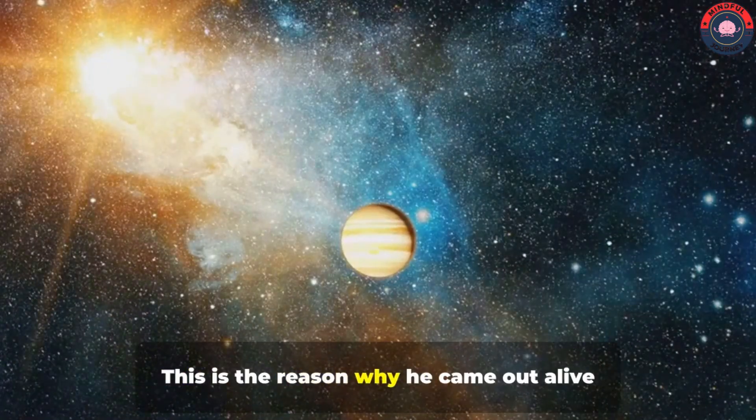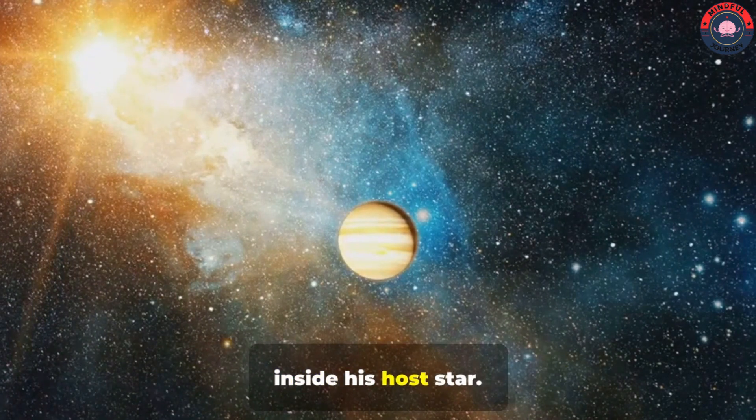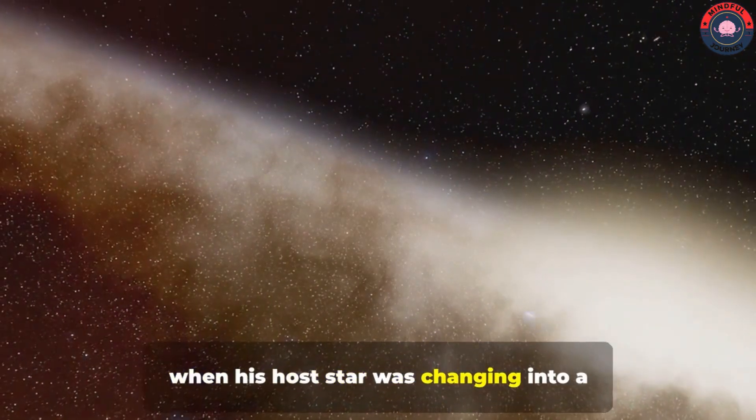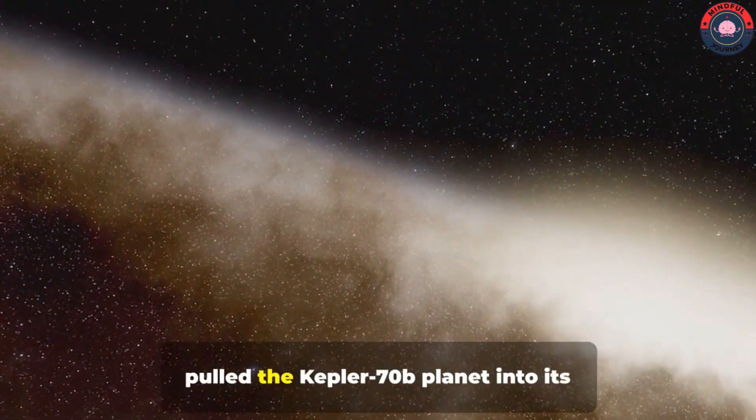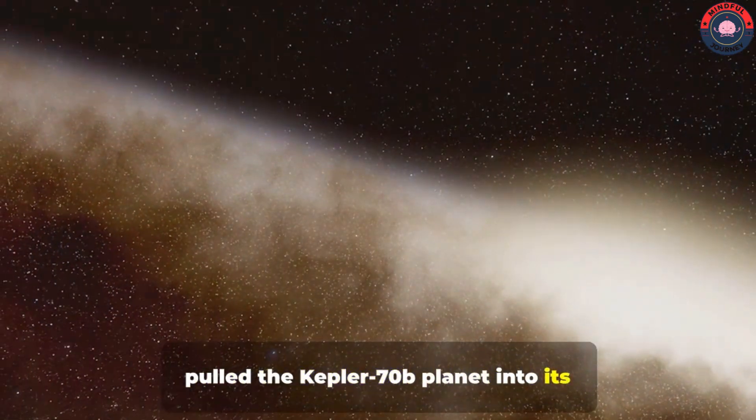But do you know the reason behind its hot surface? Well, this is the reason why it came out alive inside its host star. Actually, when its host star was changing into a red giant, the gravitational pull of that star pulled the Kepler-70b planet into its radiation layers.